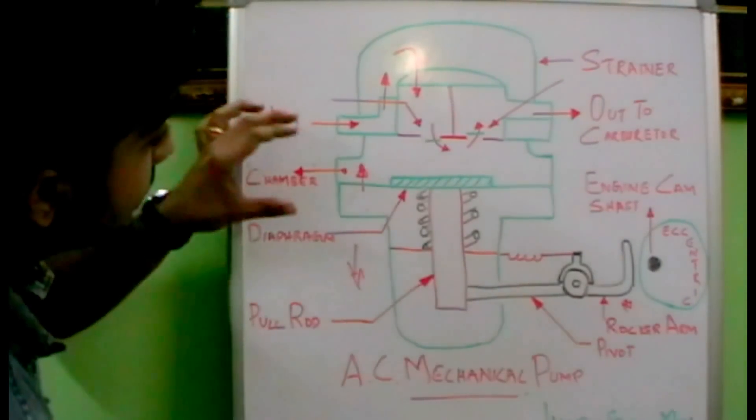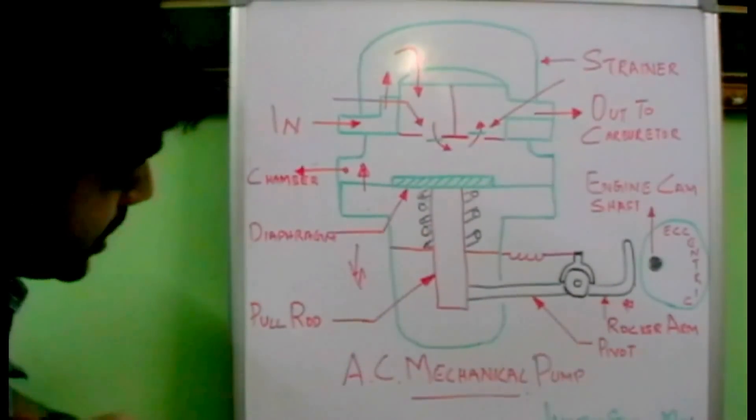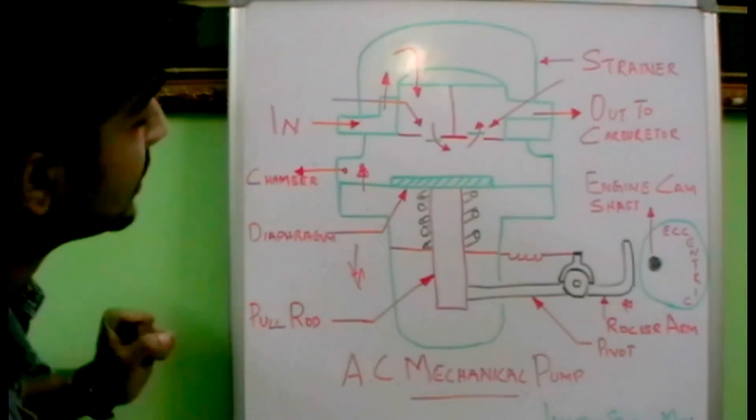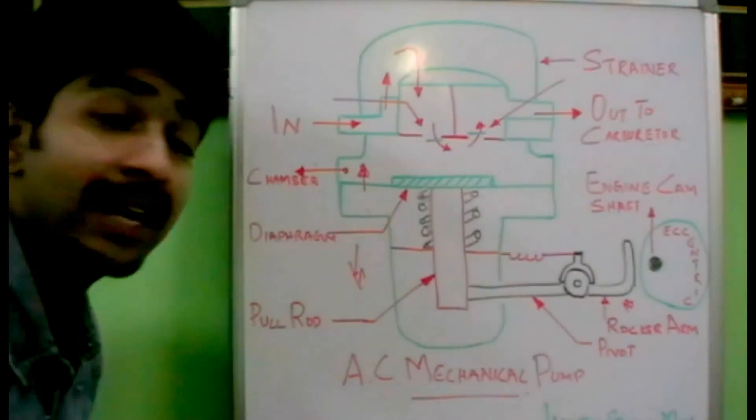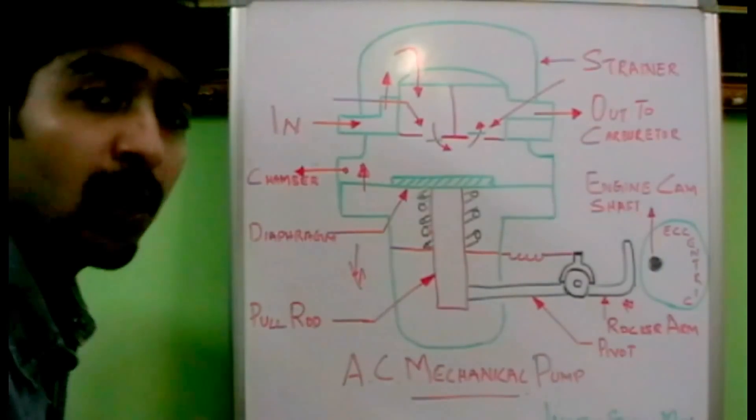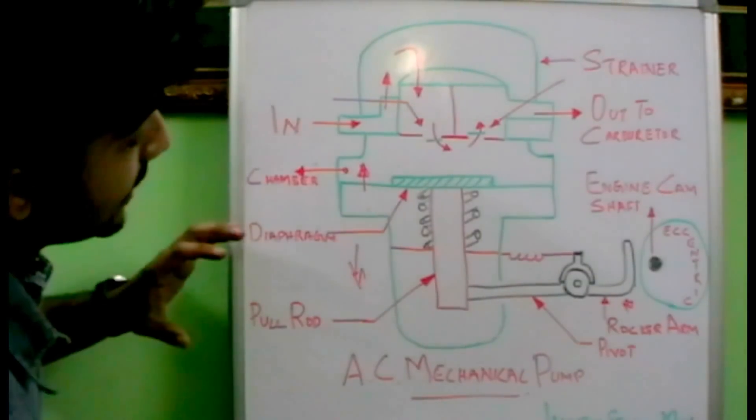And there are some other interesting facts. This diaphragm is made of high-grade cotton which is impregnated with synthetic rubber. And the valve is made of bakelite. This is because it will make it very lighter and the inertia stress will be minimum when it is made of bakelite.